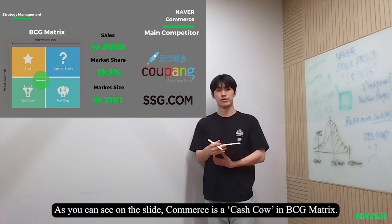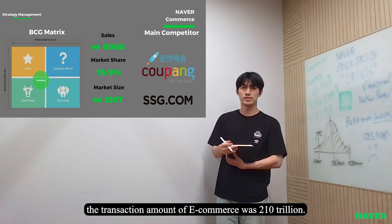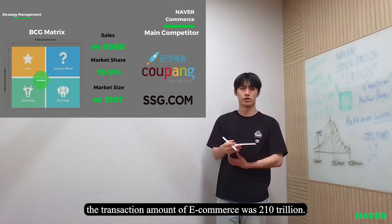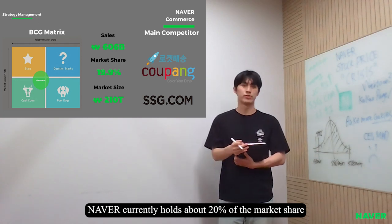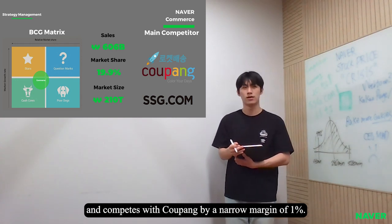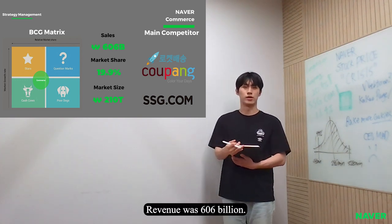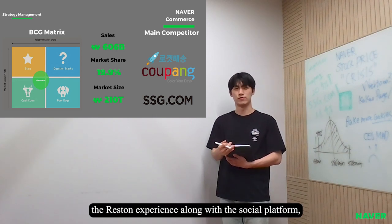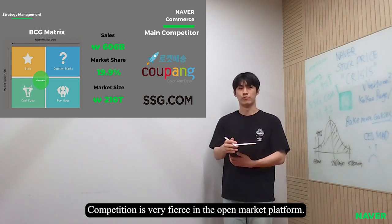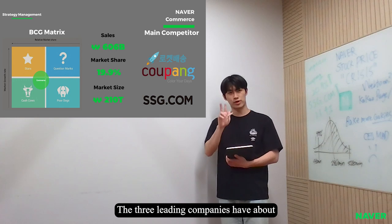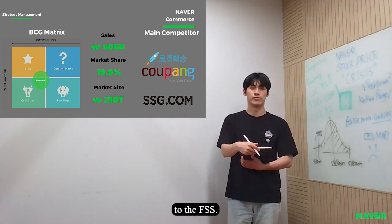As you can see on the slide, commerce is a cash cow in business metrics. According to the NSO, the transaction amount of e-commerce was $210 trillion. Neighbor holds about 20% of the market share and competes with Coupang by a narrow margin of 1%. Revenue was $606 billion. Along with the search platform, it is a major business sector of Neighbor. Competition is very fierce in the open market platform. The three leading companies have about 84% of the market, according to the FSS.